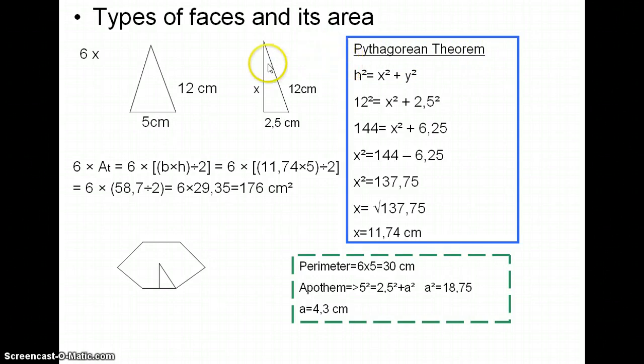So this theorem says that the hypotenuse, the longest side squared, equals the sum of the two other sides both squared. So we change this equation and we have 12 squared equals x squared plus 2.5 squared, so 144 equals x squared plus 6.25.